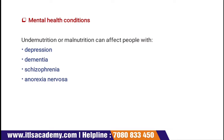Then comes mental health conditions. Mental health conditions may underlie undernutrition or malnutrition. Undernutrition and malnutrition can affect people with depression, dementia, schizophrenia, and anorexia nervosa. Eating disorders can severely affect the quality of life of people living with these conditions and those close to them.